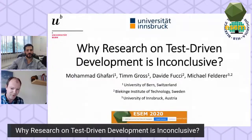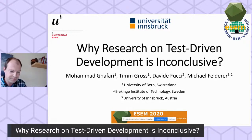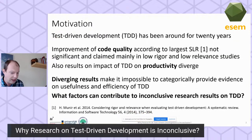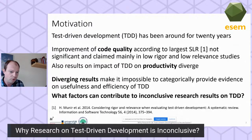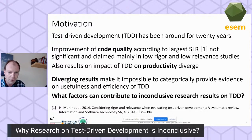Now we have the slides. Test-driven development has been around for 20 years and came up with agility, and there have been many studies on the topic. The results they present are somehow contradictory and inconclusive. For instance, with respect to code quality, one of the largest SLRs in the field shows results are not significant, while other low-rigor studies show there is an impact on code quality.